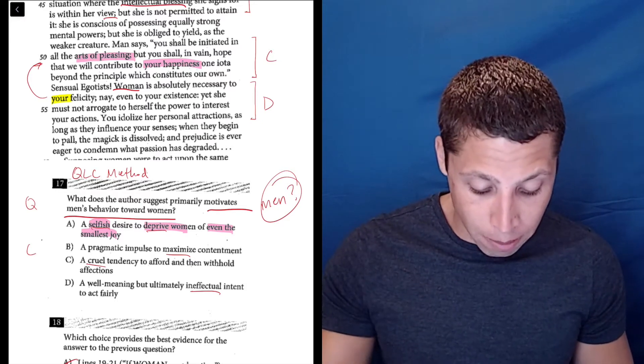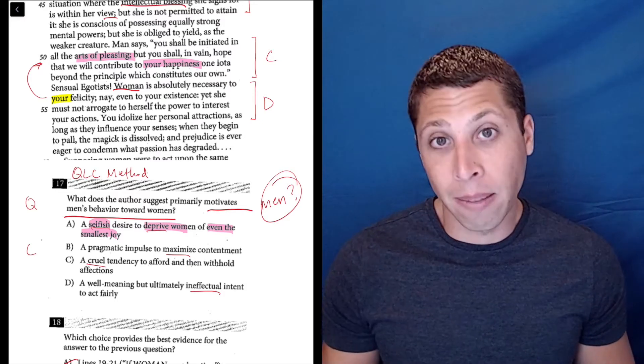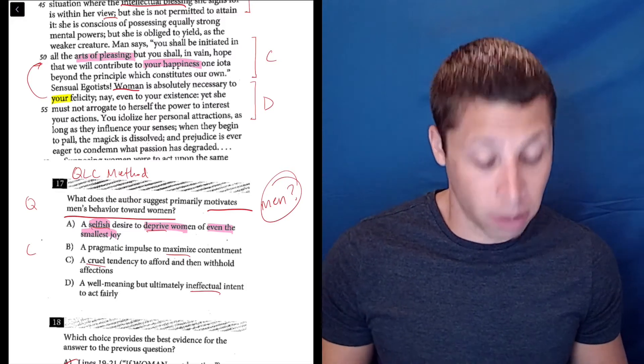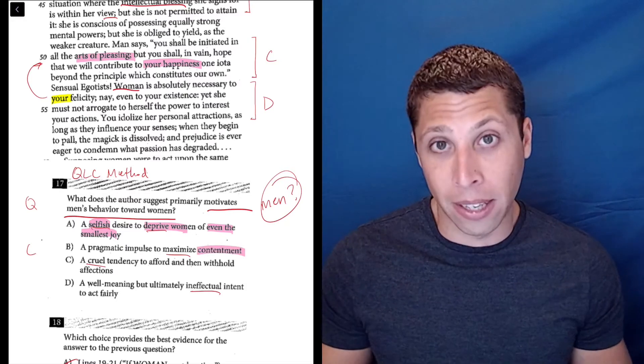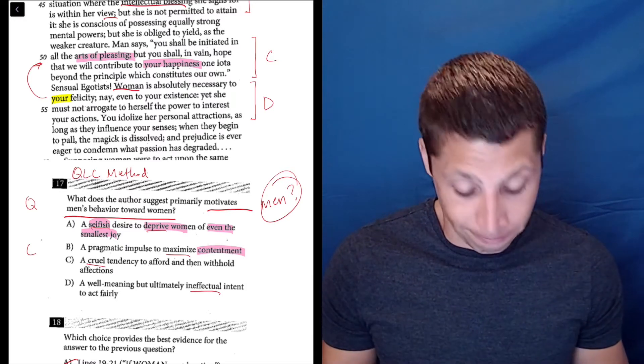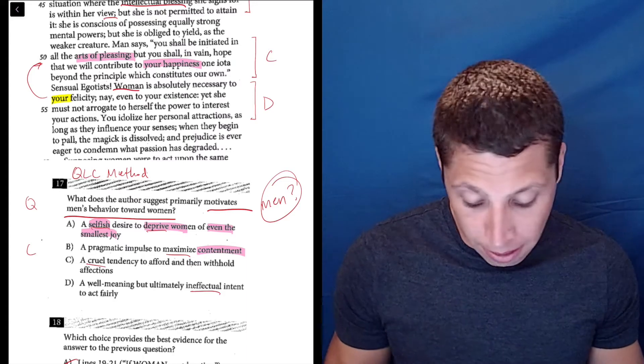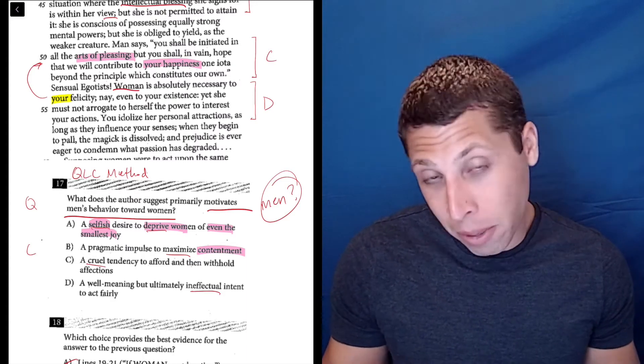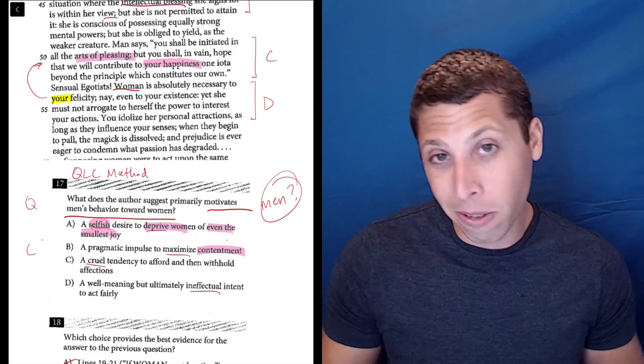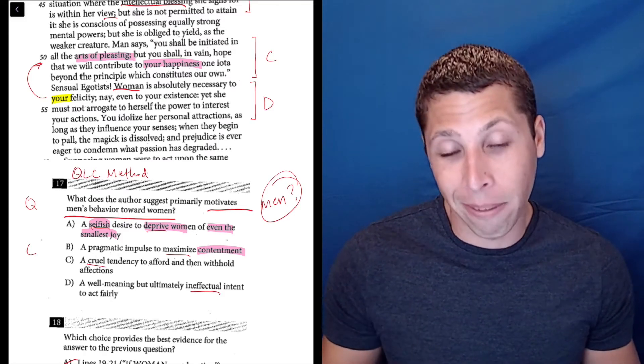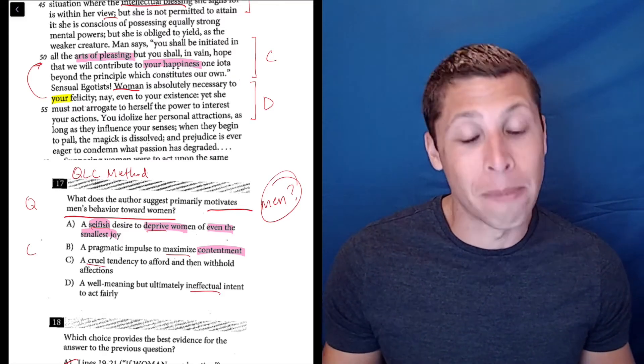Choice B: a pragmatic impulse to maximize contentment. Well, contentment is a harder word, but contentment also means happiness and joy. So it's a shorter choice. Pragmatic is a hard word, but if I were just going on the words I know, hopefully we know contentment means happiness, and so we've got to keep this one in as well.